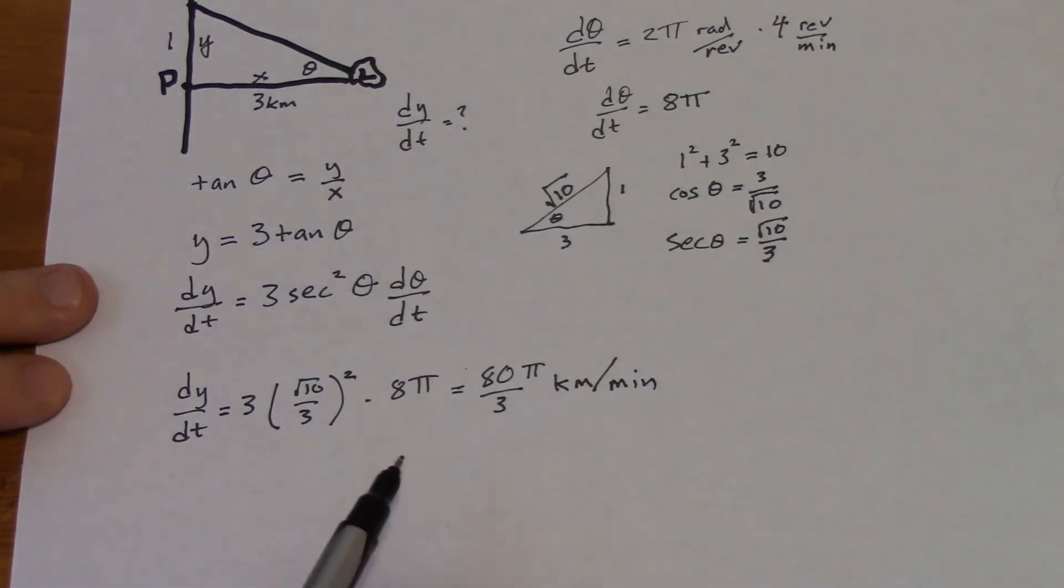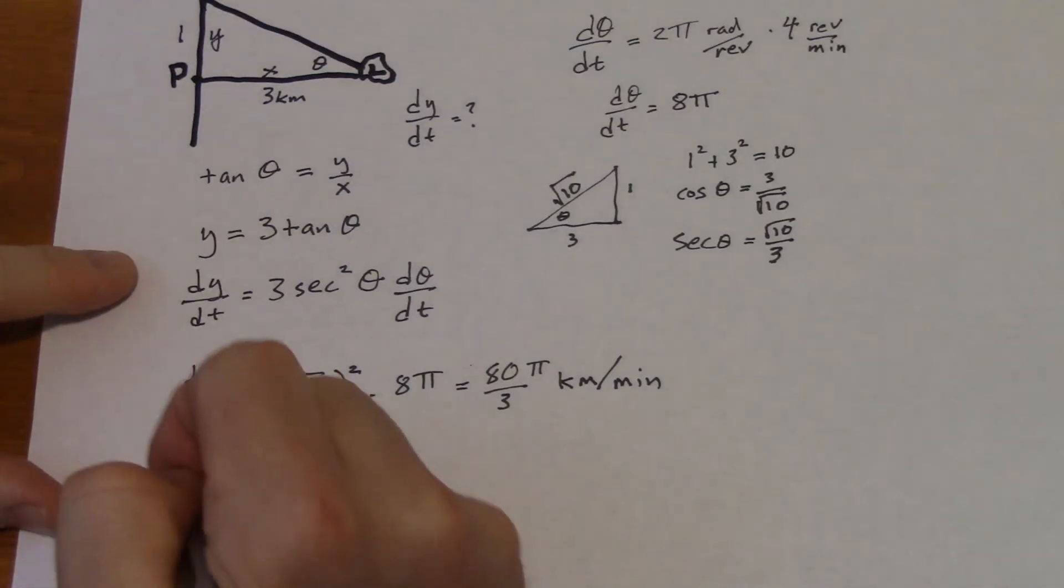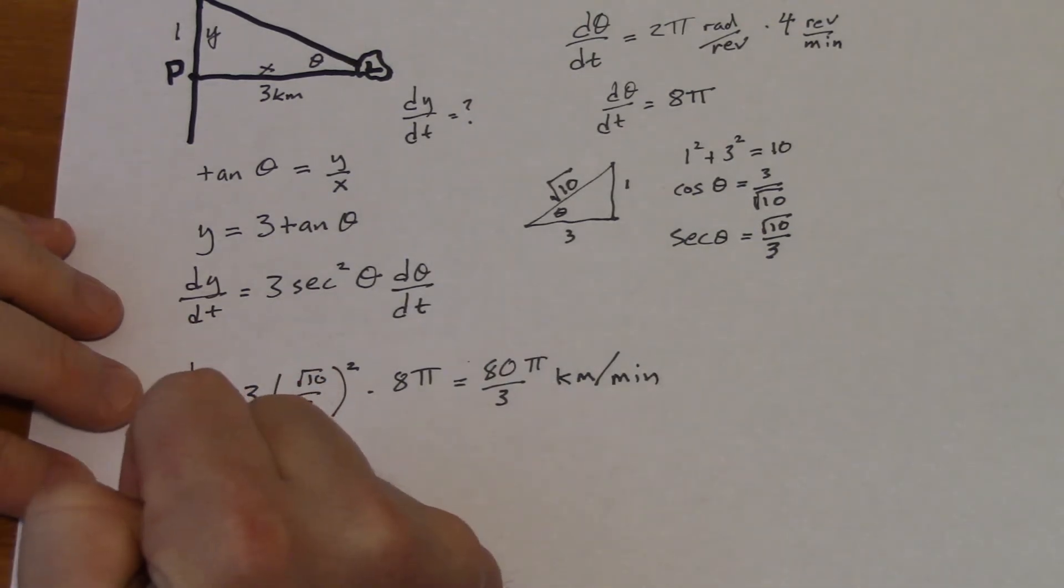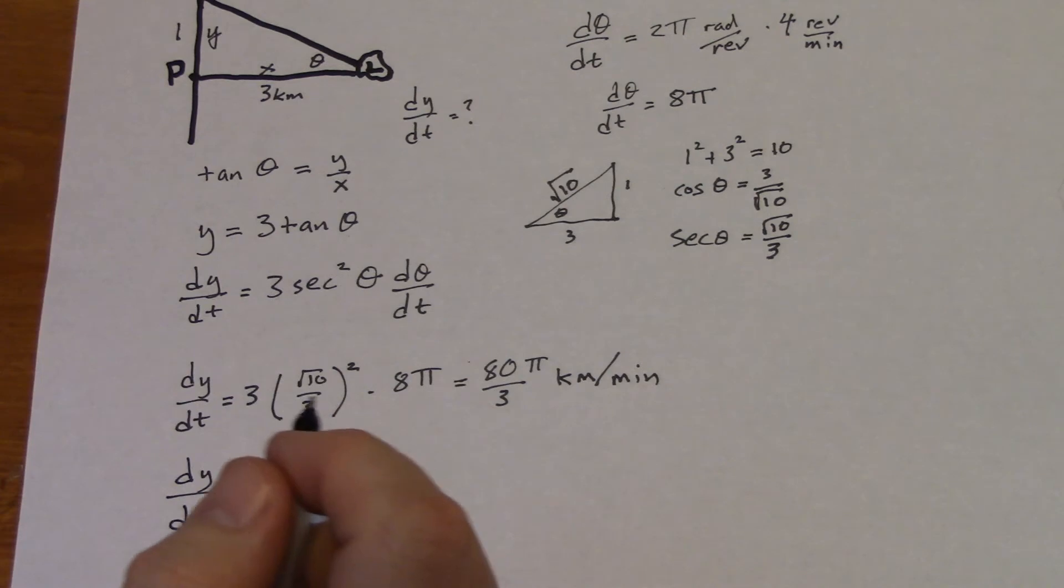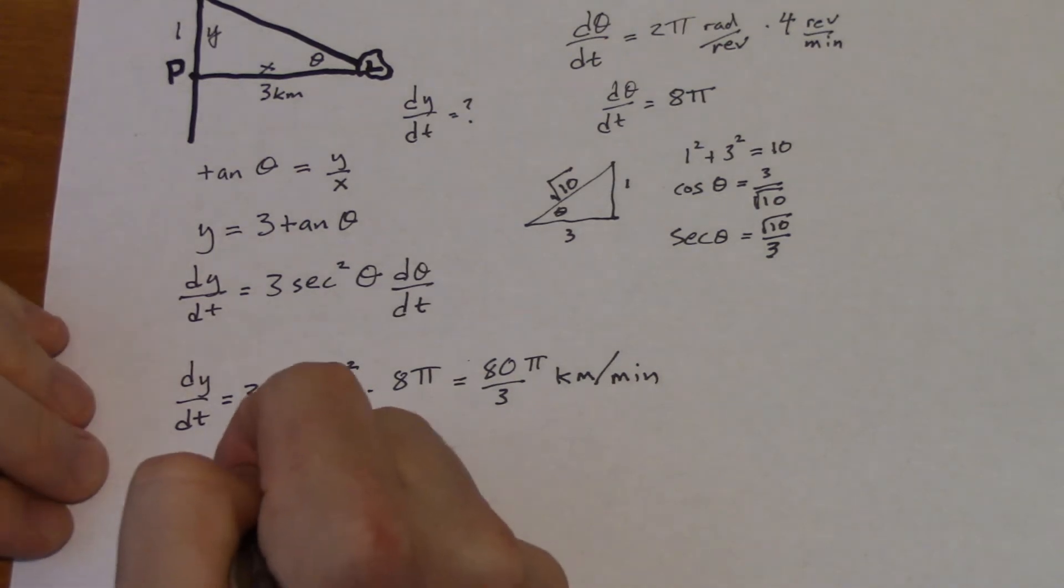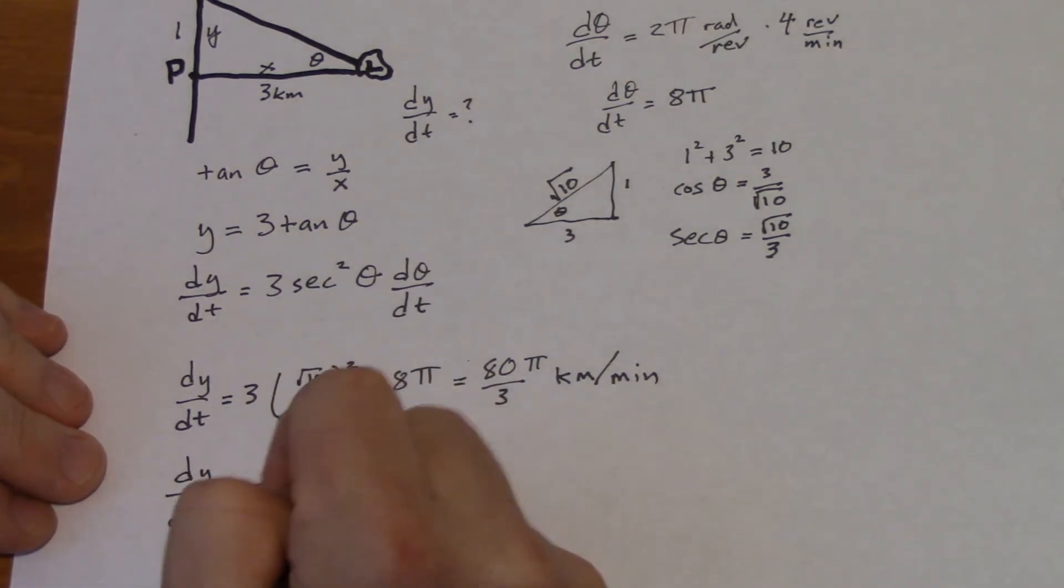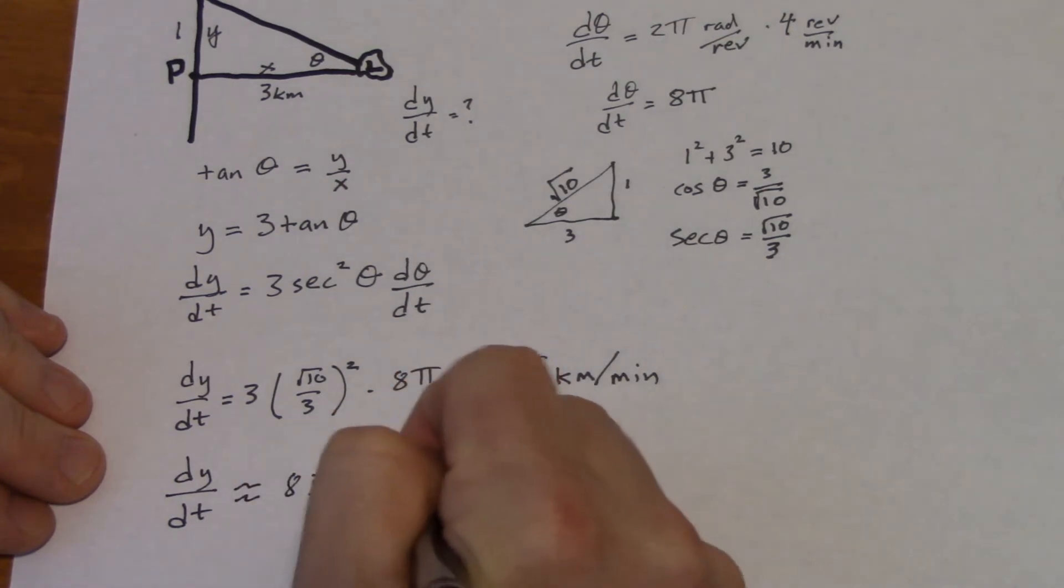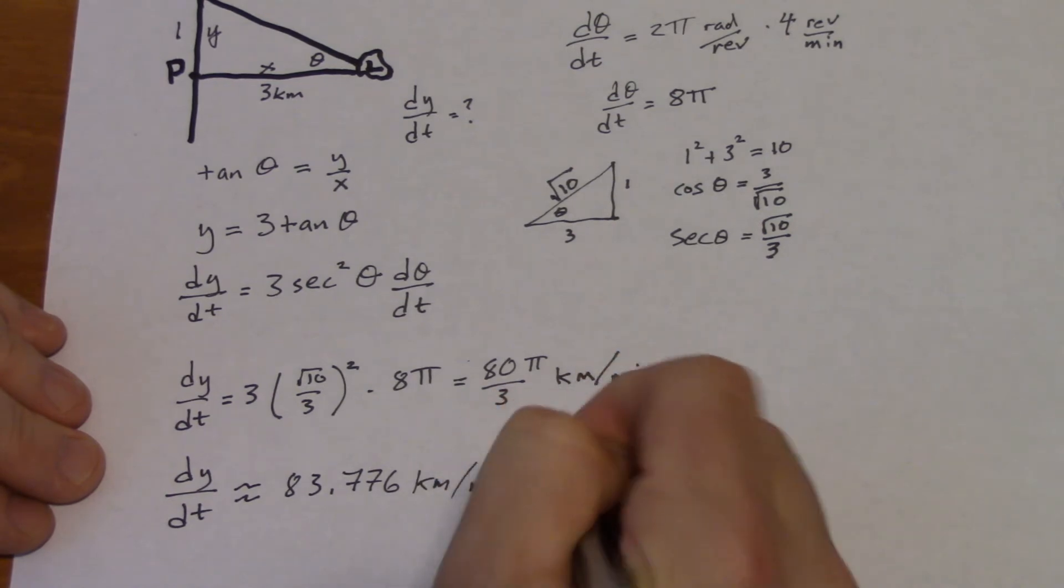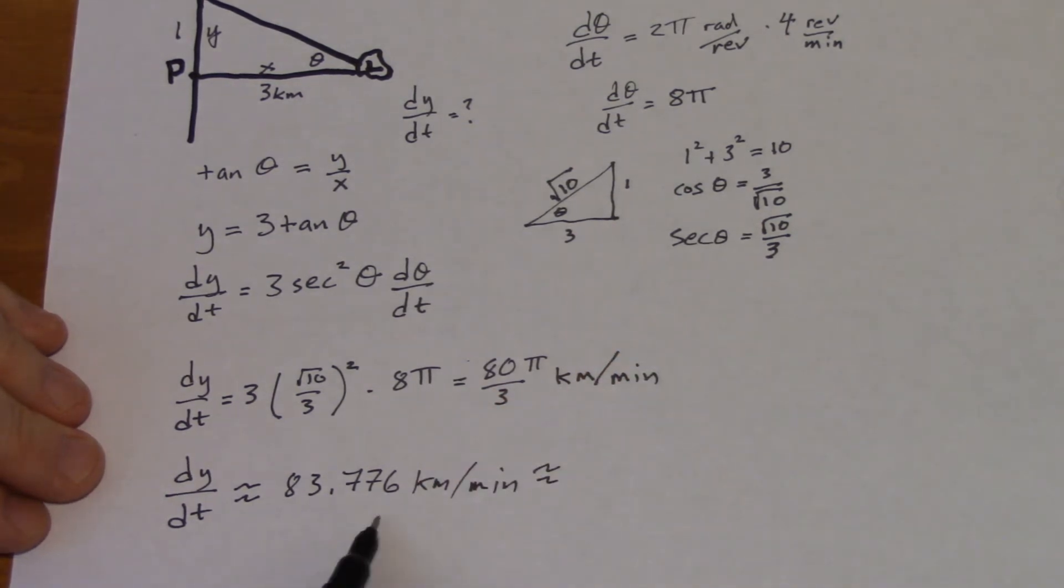Just so we know, when you're doing problems like this, sometimes you want to think about does this mean anything in terms of the real world, and is this answer realistic? This one's a really good one to look at because that's really, really fast if you think about it. But when you're out there in the middle of nowhere, the light is going to be moving past you in a really fast manner anyway. So that's roughly 83.776 kilometers per minute. And remember on the AP exam, you're supposed to use three decimal points, that's why I did this here.